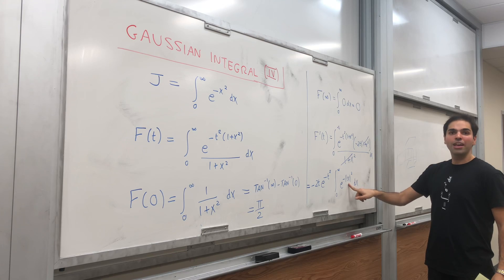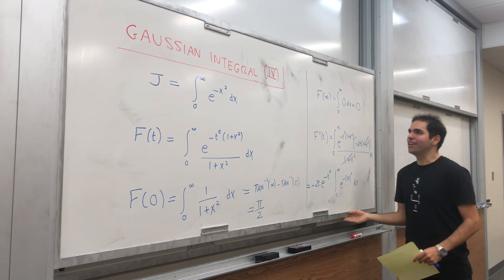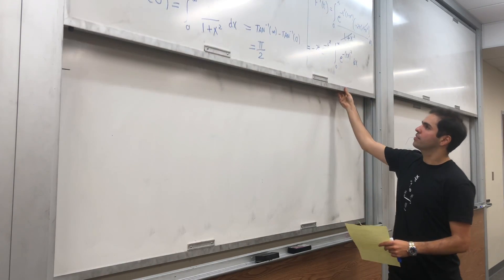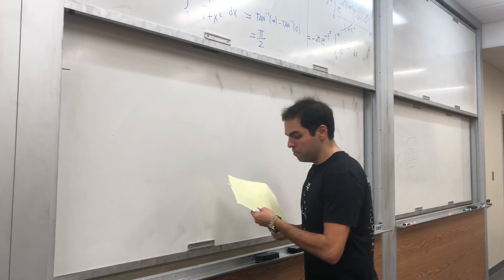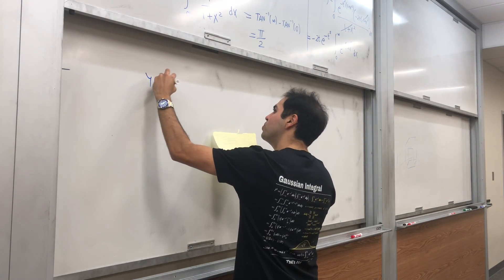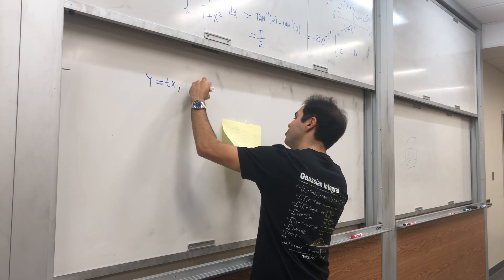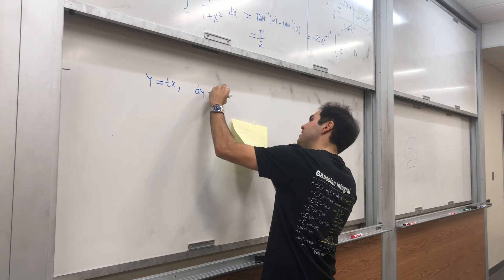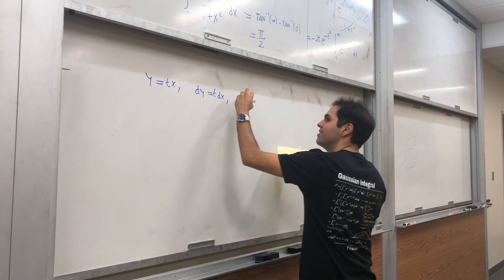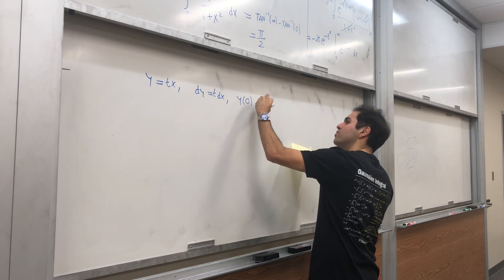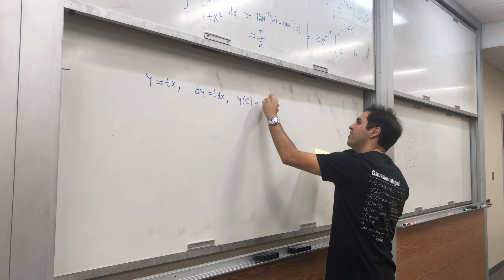So of course, let y be tx and see what happens here. So y equals to tx. Then as usual, dy is t dx. And then let's see y at zero. So x equals to zero, this is just zero.